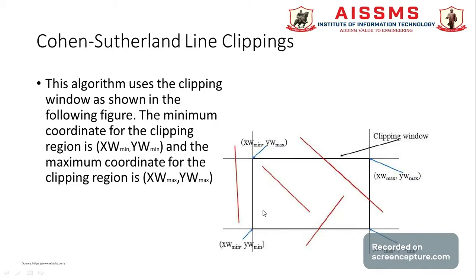To find the minimum coordinate for the clipping region, in the Cohen-Sutherland line clipping algorithm, your window or coordinate will be divided into nine regions. The minimum coordinate for the clipping region is X_wmin and Y_wmin, and the maximum coordinate for the clipping region is X_wmax and Y_wmax. These are the minimum and maximum coordinates for the region.